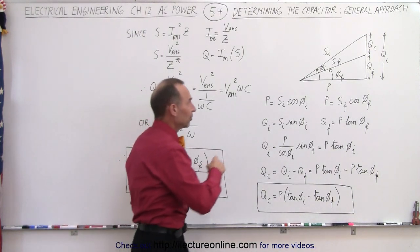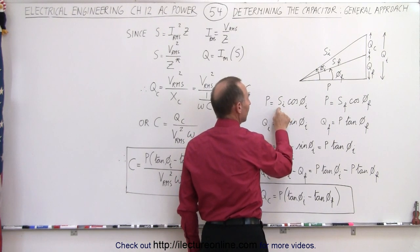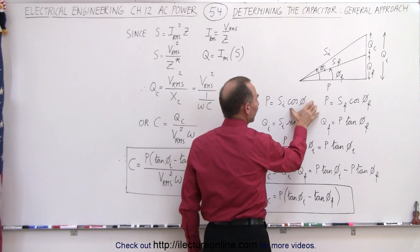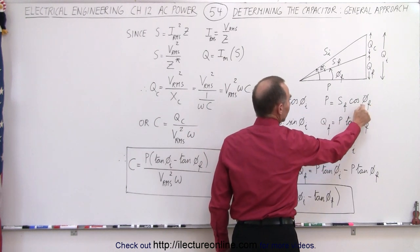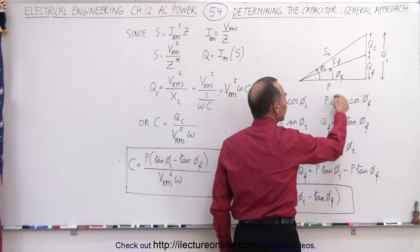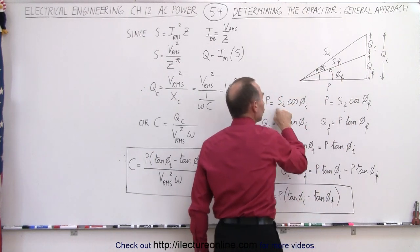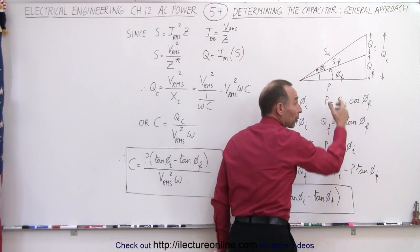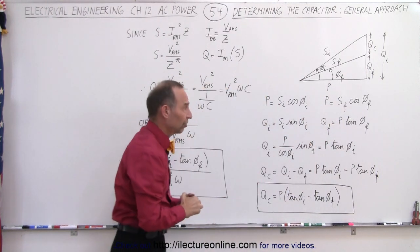Looking at this triangle, we can calculate the power in terms of the initial complex power and the cosine of the initial phase angle, which gives us the power factor. Then if we go to a larger power factor with the cosine of the final phase angle, we'll have a final complex power which should be smaller than the initial complex power. A larger power factor requiring less current will still give us the same amount of power to the resistor of the load.